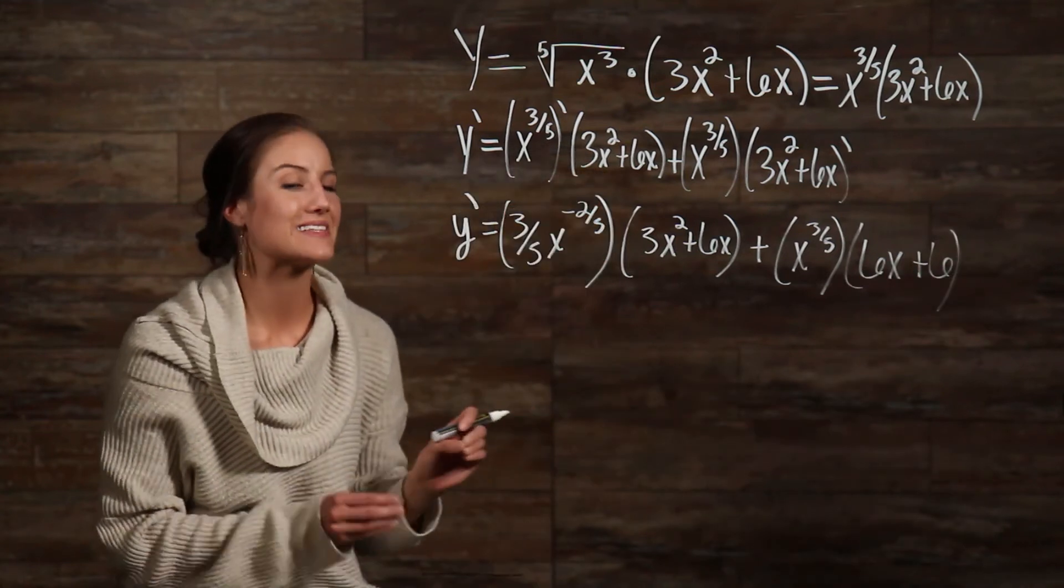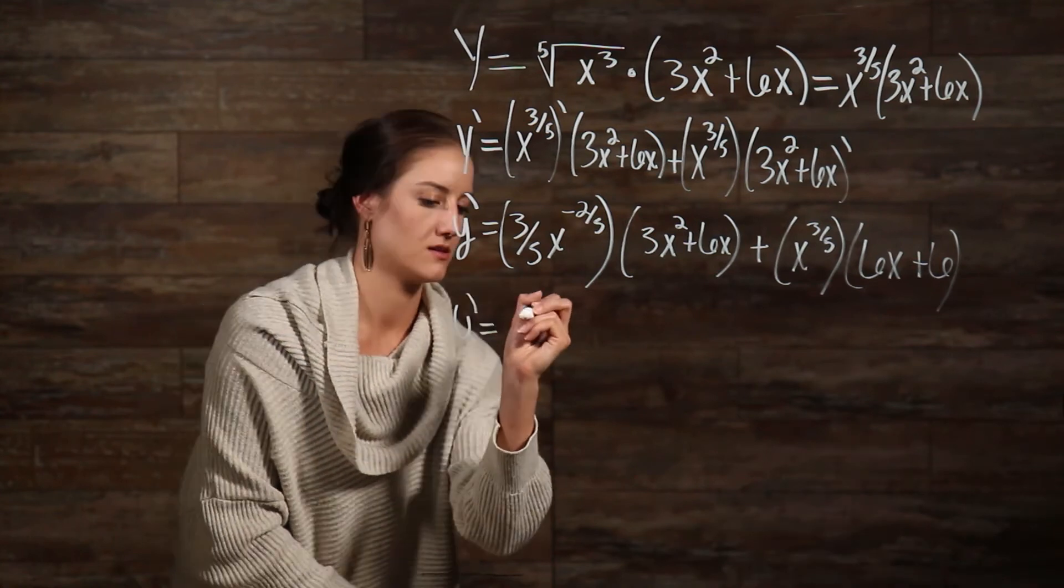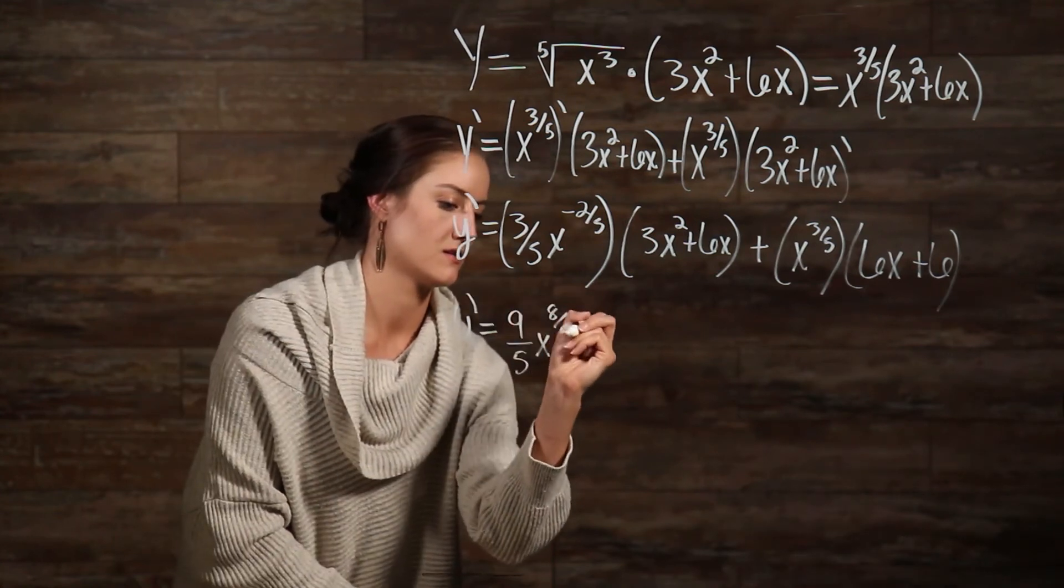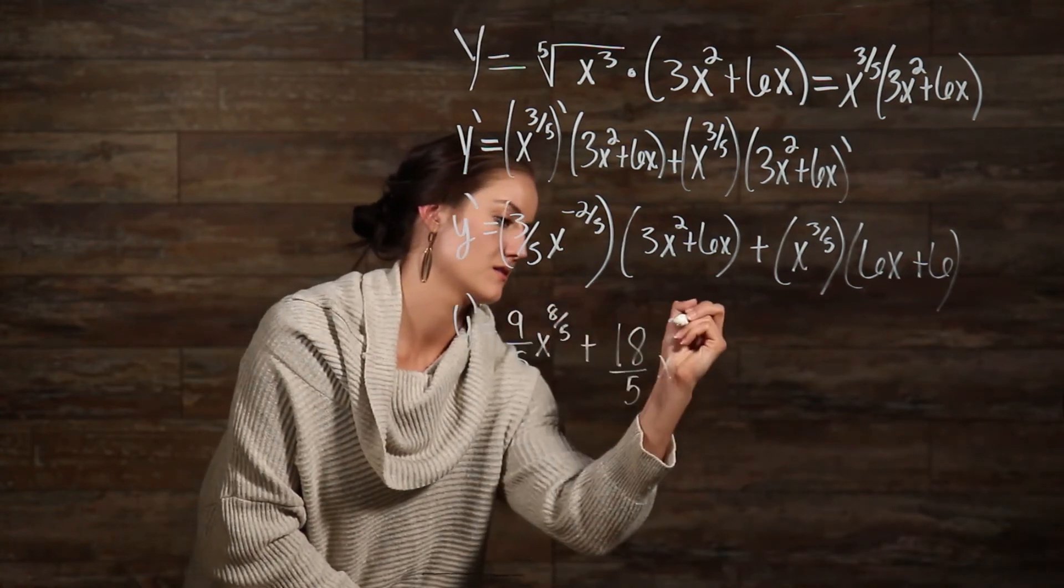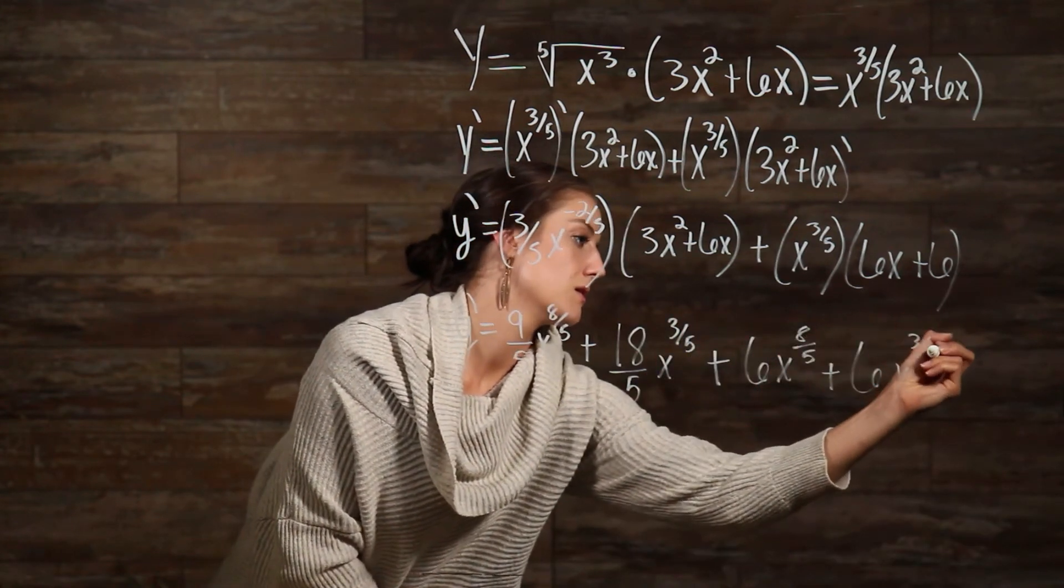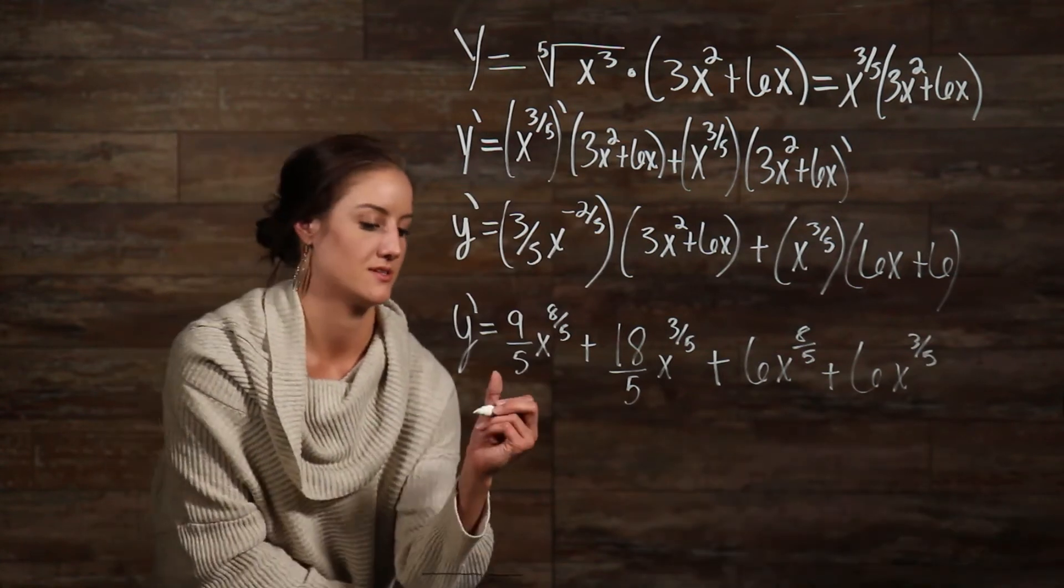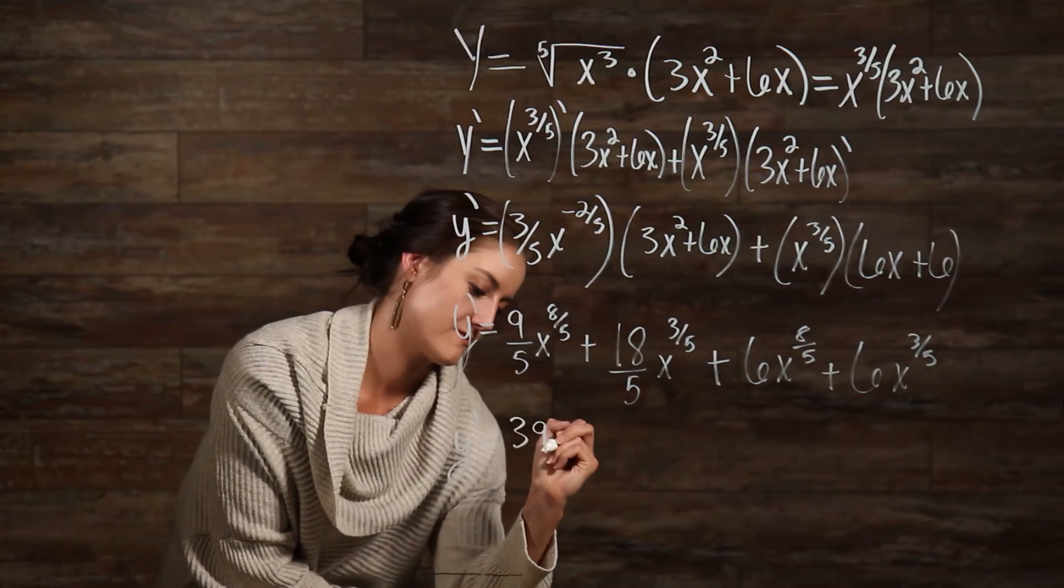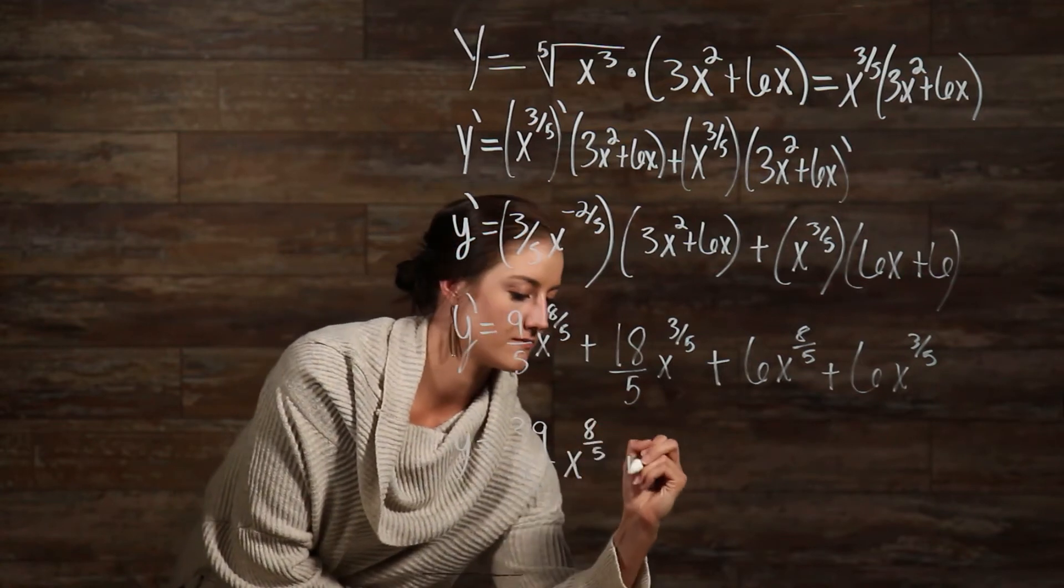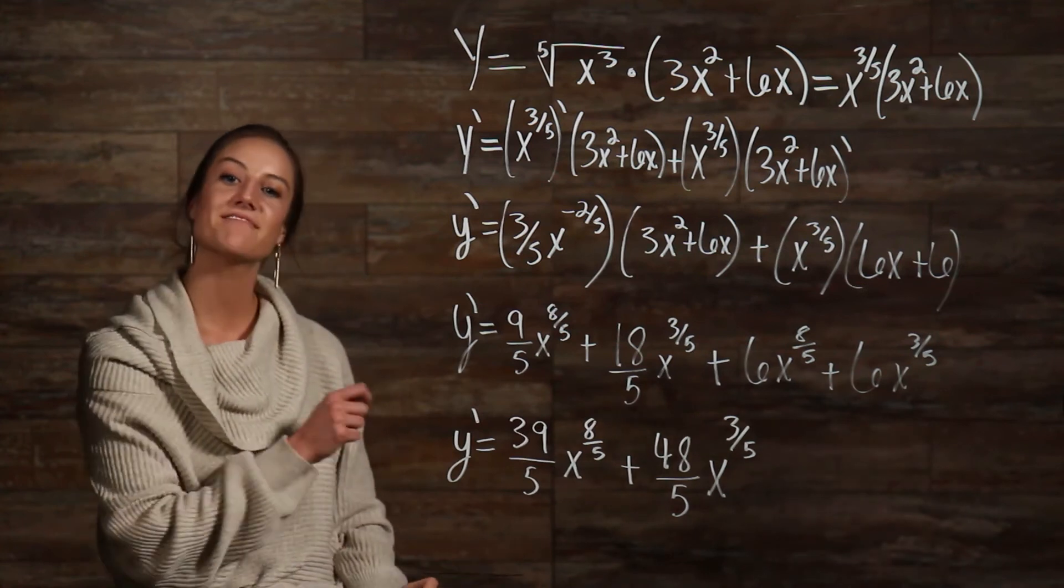Now, we've taken the derivative, but we still need to multiply our functions together. We can simplify this even further by adding together our like terms. And, there's our answer.